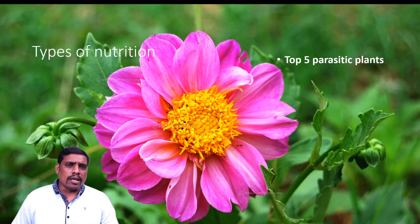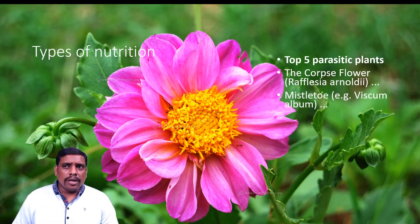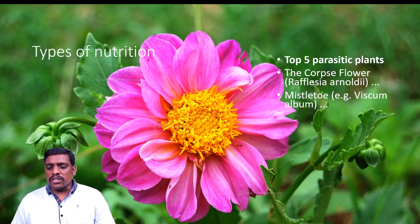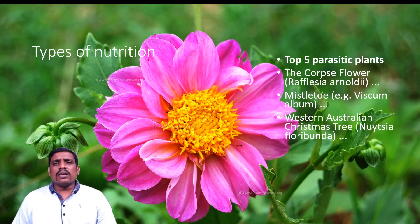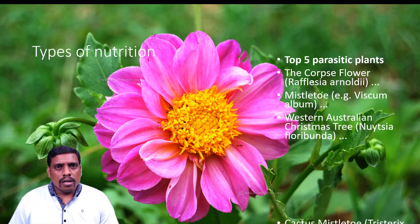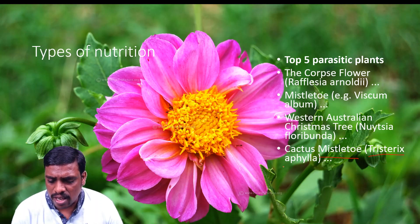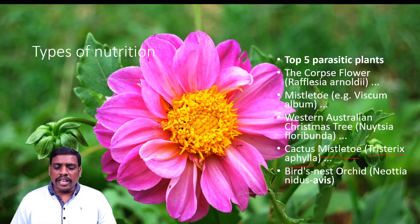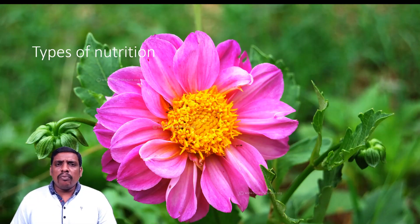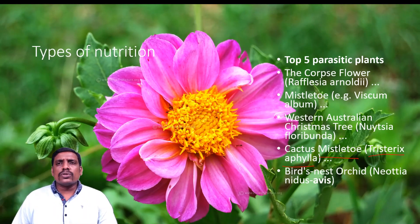The top five parasitic plants in nature include: first, Rafflesia arnoldii; second, Mistletoe (Viscum album); third, the Western Australian Christmas tree (Nuytsia floribunda); fourth, Cactus Mistletoe (Tristerix aphyllus); and fifth, the Bird's Nest Orchid (Neottia nidus-avis). These are the top five parasitic plants which show parasitic nutrition.